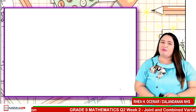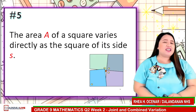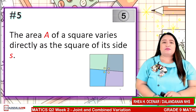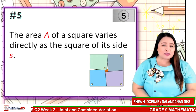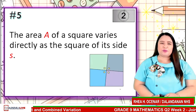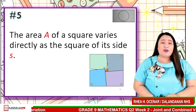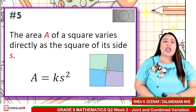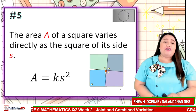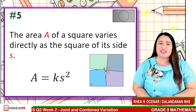For the last item, statement number 5. The area A of a square varies directly as the square of its side S. 5 seconds to answer. Time's up. The correct answer is A is equal to kS squared. If you got five correct answers, you are now ready to learn our next lesson.